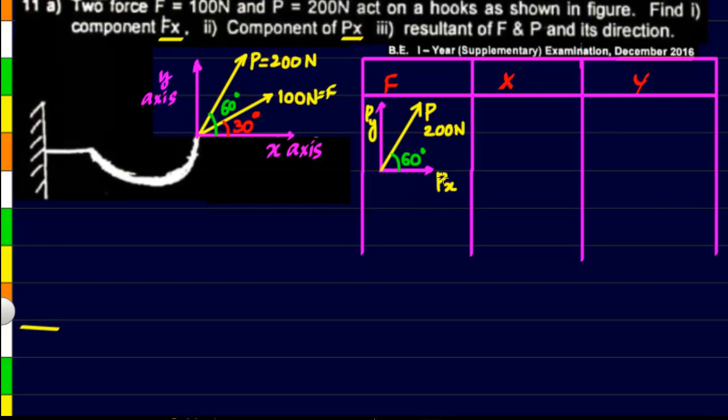Now the x-axis becomes adjacent to the angle and this one here becomes opposite. So the x component, the Px value, we can write it as 200 multiplied with cos of the angle, the angle being 60 degrees. So this is the value of Px.